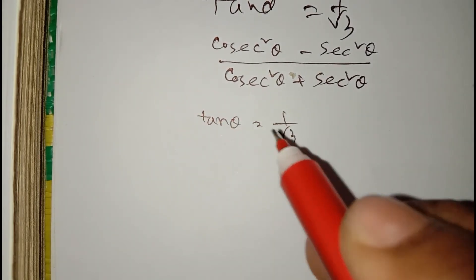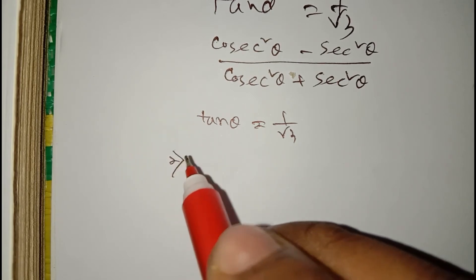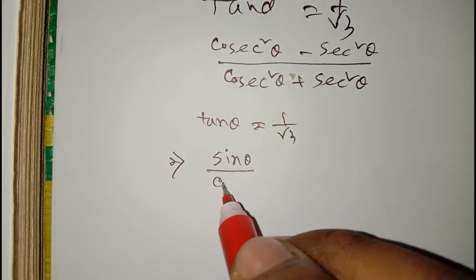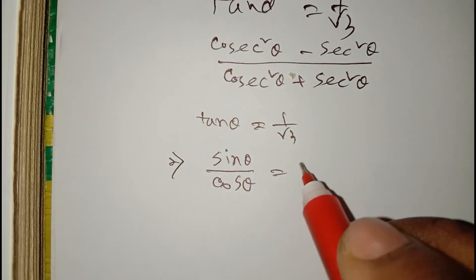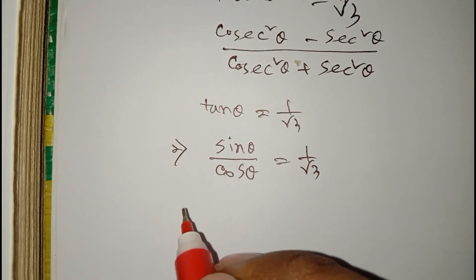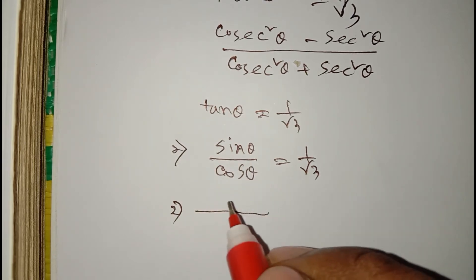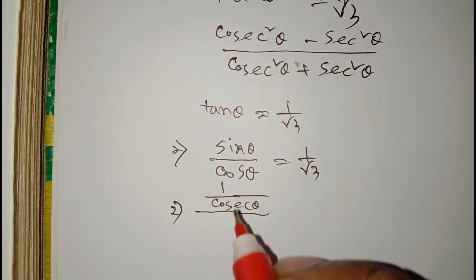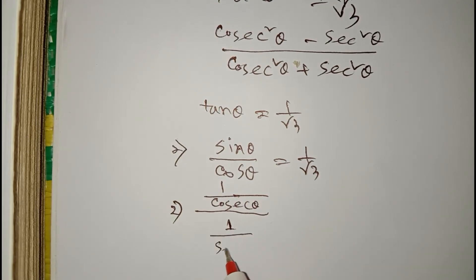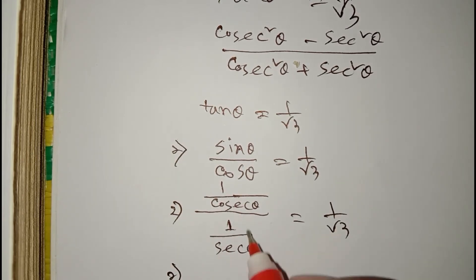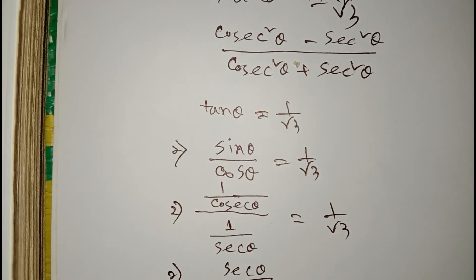Given tan theta equals 1 by root 3. Now tan theta equals sin theta divided by cos theta. So sin theta equals 1 and cos theta equals 1 by sec theta, giving us sec theta divided by cosec theta equals 1 by root 3.